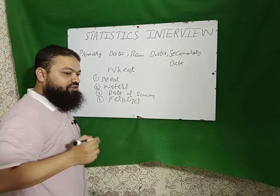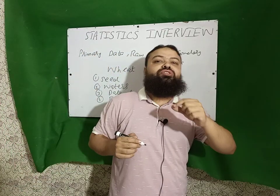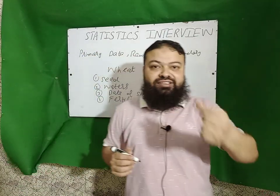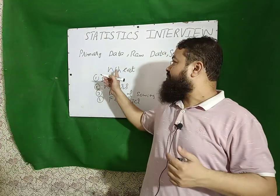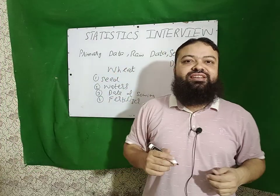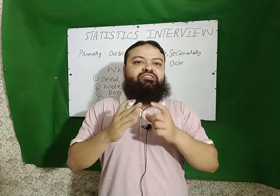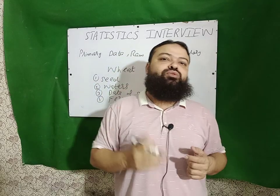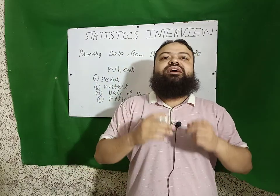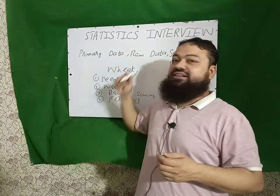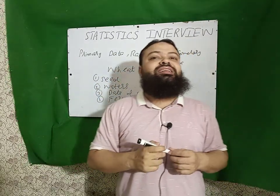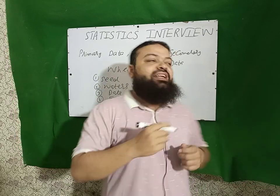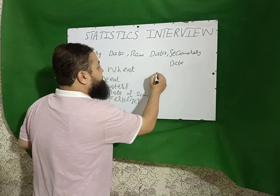All those variables affect the production of wheat. This is primary data which has been collected originally by you. What is raw data? Raw data is an aggregated, unorganized data.